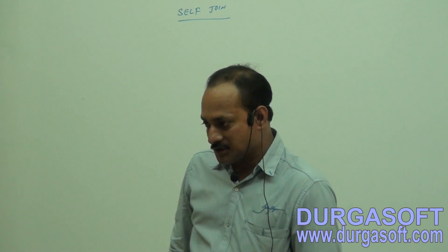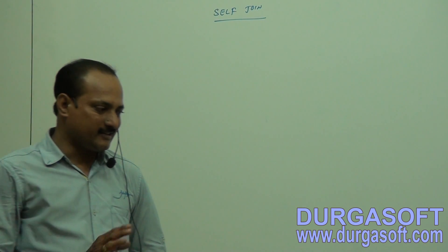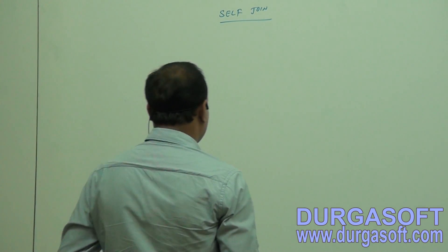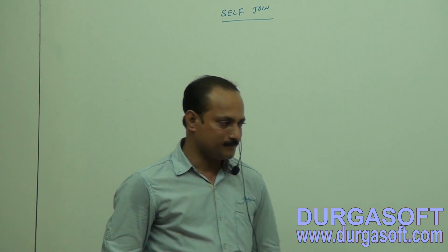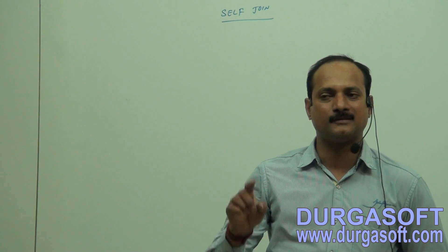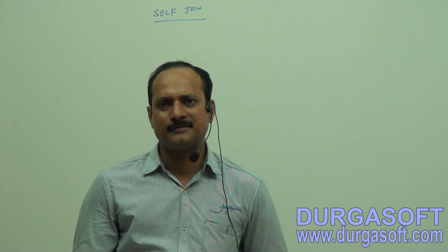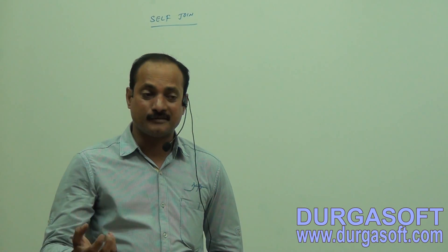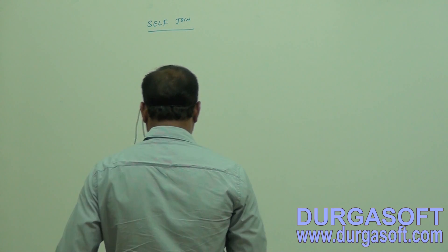We have discussed about equi-join and inner-join. Now, what is meant by self-join? Another type of join is self-join. In case of self-join, you will get data from one table only. Generally, to get data from one table, we don't require a join condition. But some kind of requirements are there where you have to apply a join condition. Let us see.